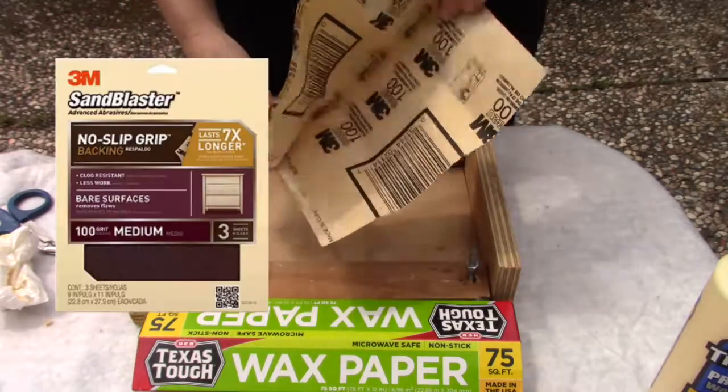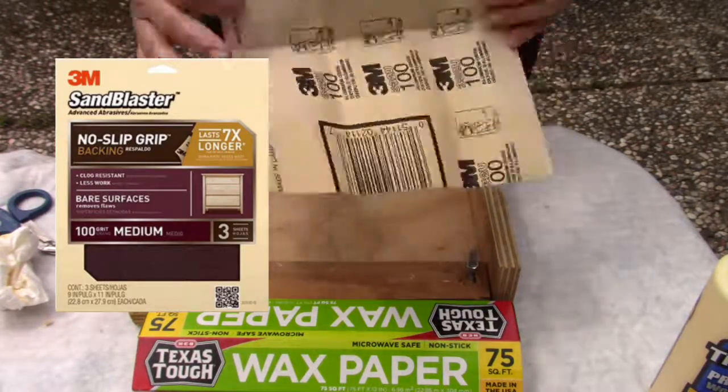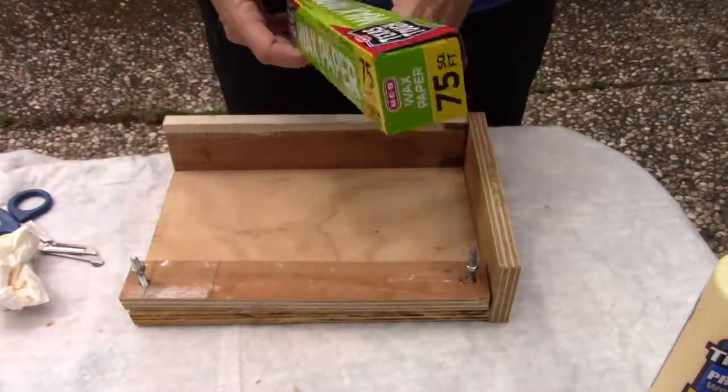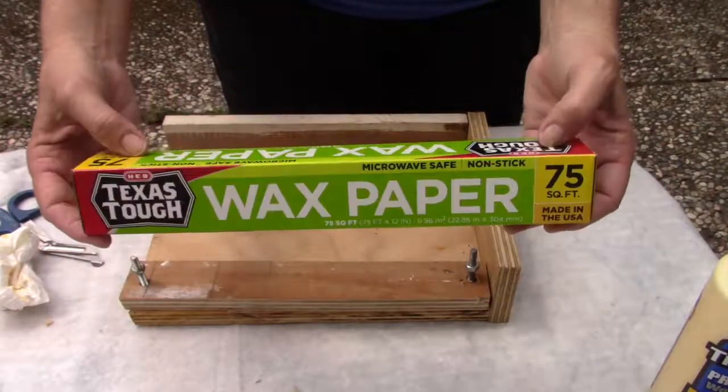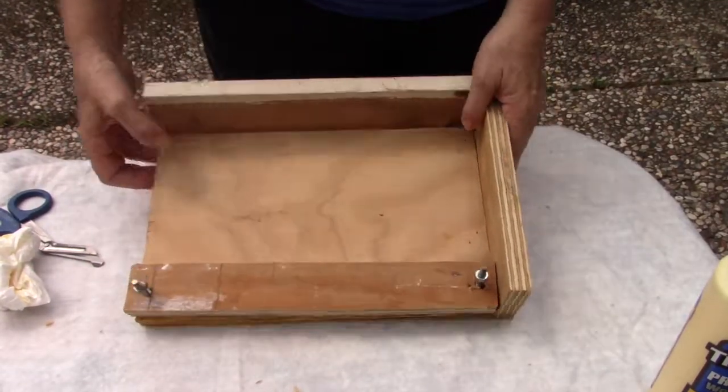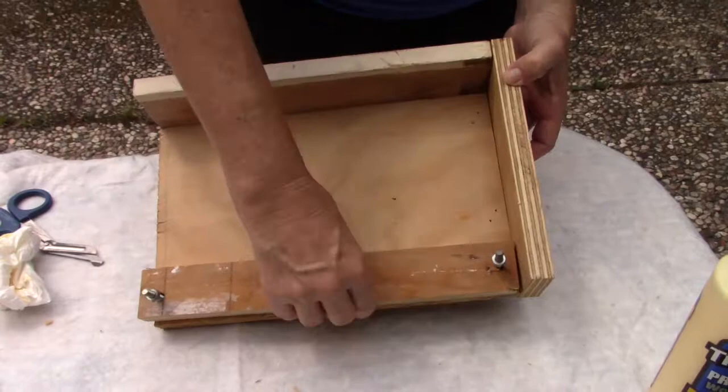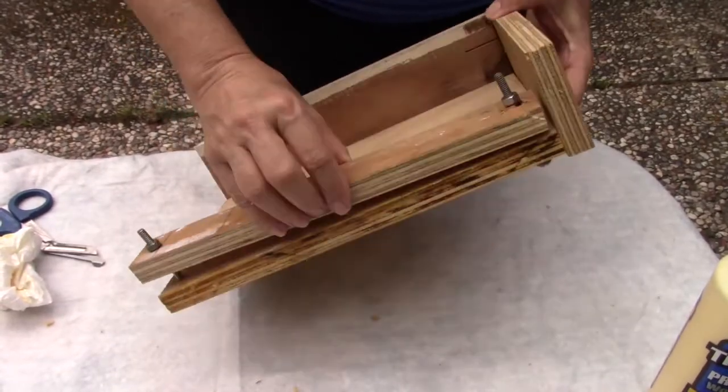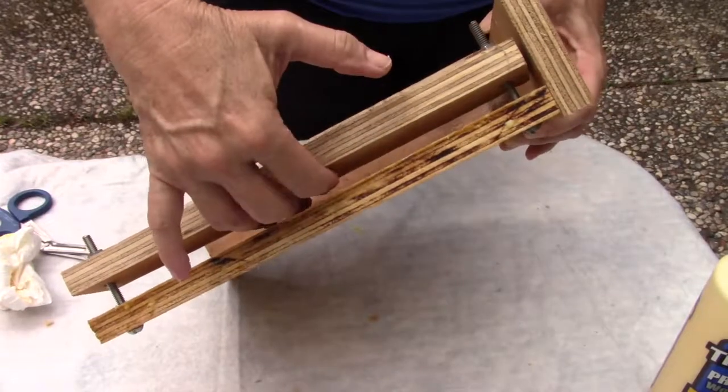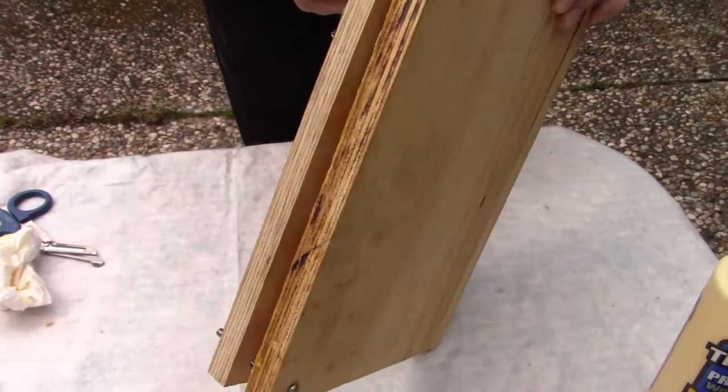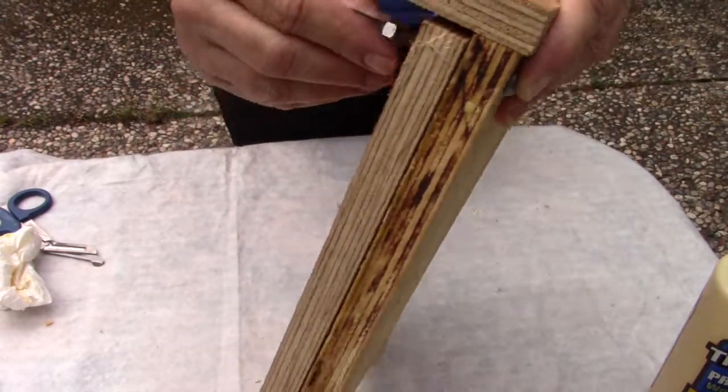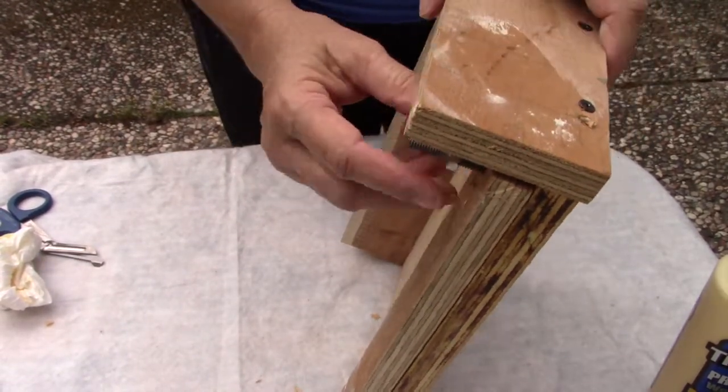Sandpaper. I used a hundred grit. Wax paper. Just use the cheapest wax paper you can find. It's going to stop the edges from sticking. And this little homemade book clamp goes in between here, and you tighten it down with these screws. I just made this out of scrap wood I had laying around.